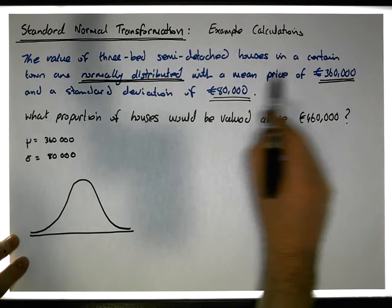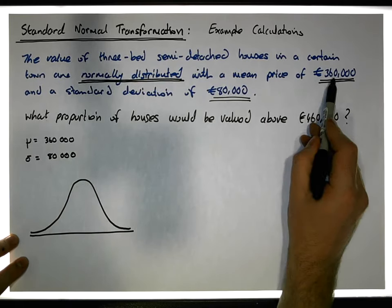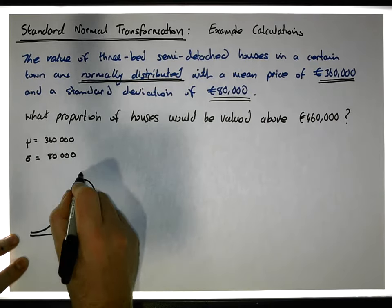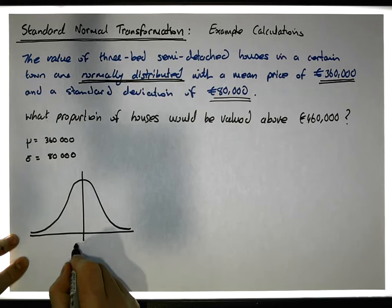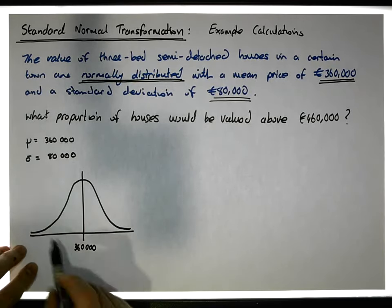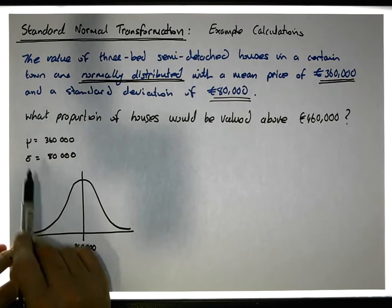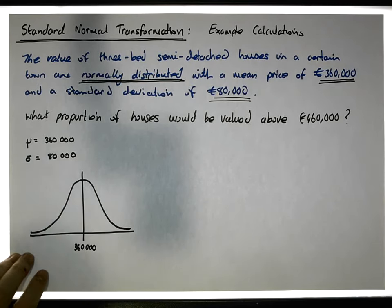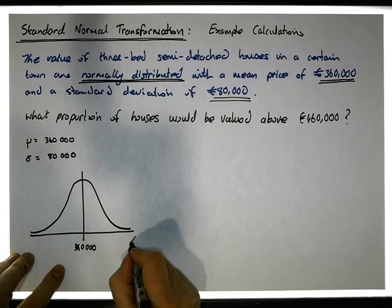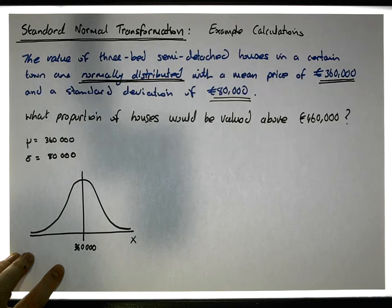We know the parameters associated with this normally distributed curve. It's centered on 360,000 euros. 360,000 seems to be down here. And its standard deviation is 80,000 euros. Let's say this shape represents a curve centered on 360,000 with a standard deviation of 80,000. This is x, which has to do with house prices.